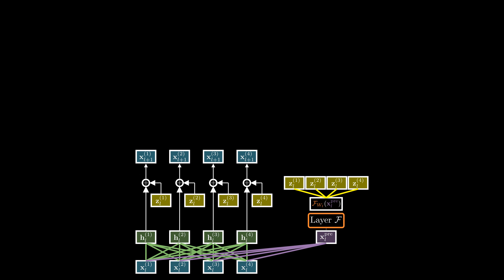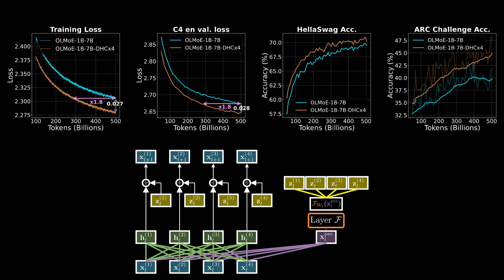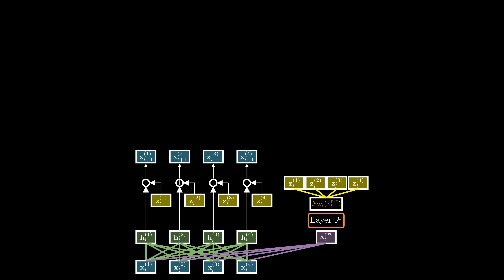Hyperconnections show promising results over standard residual connections — up to 1.8× faster convergence and higher accuracy across multiple benchmarks compared to the baseline. However, when DeepSeq attempted to adapt this technique for their model training, they observed significant training instability.